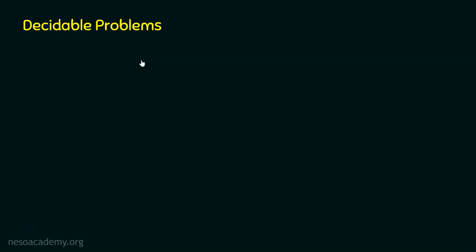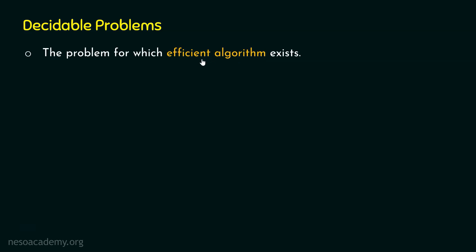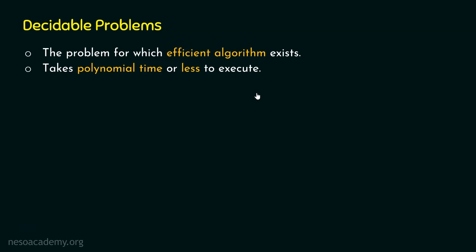A decidable problem is a problem for which an efficient algorithm exists. An efficient algorithm is an algorithm which takes polynomial time or less than polynomial time to execute — it will not take more than polynomial time.